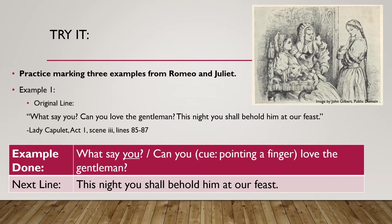So let's try it. We're going to practice marking three examples from Romeo and Juliet. All three examples come from act one and all three have a message about love. The first example is spoken by Lady Capulet to Juliet: 'What say you? Can you love the gentleman? This night you shall behold him at our feast.'